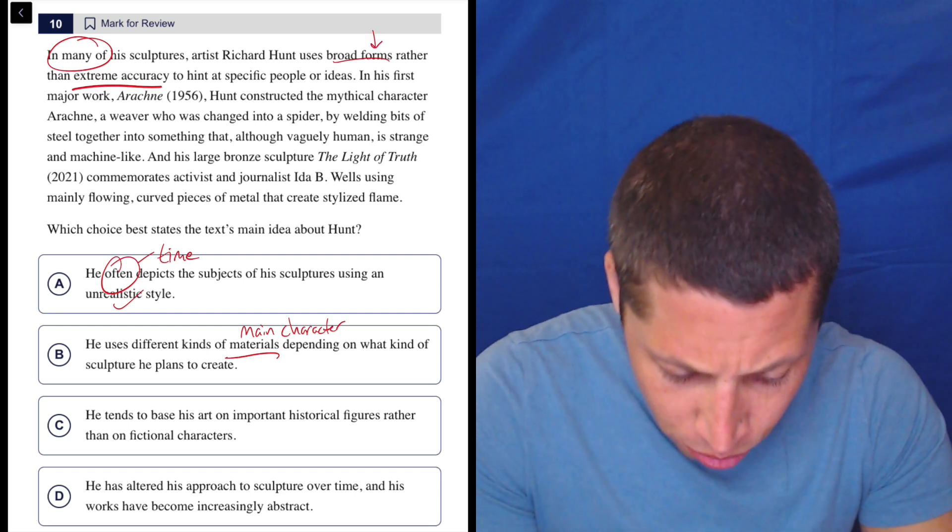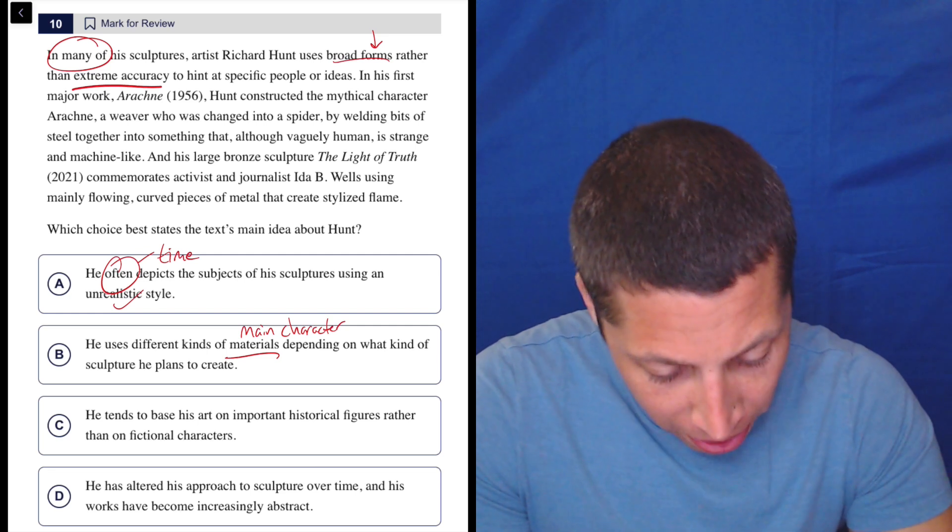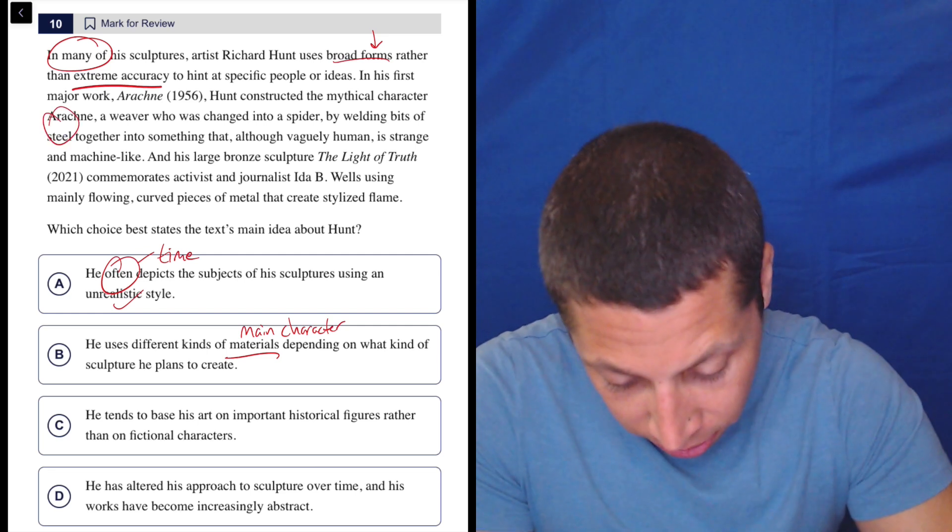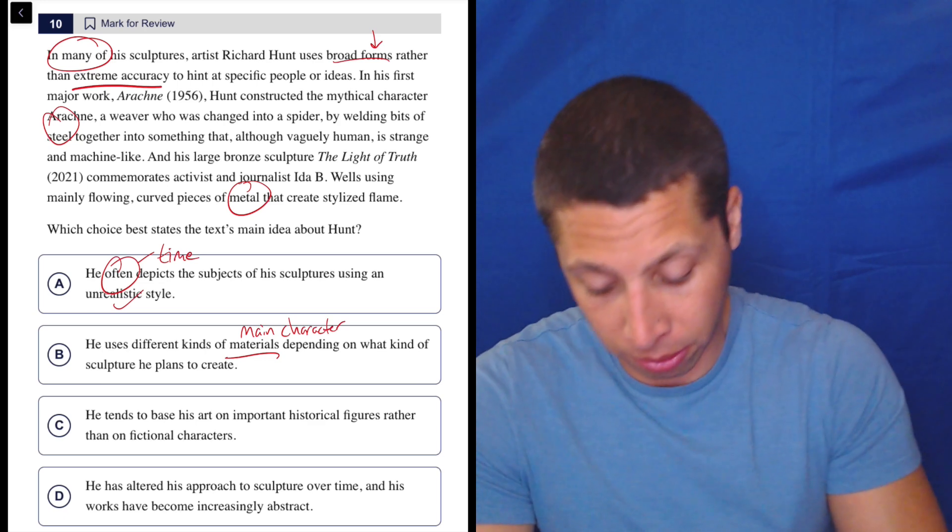It also doesn't really – yeah, I don't know. It says it's metal in both cases, right? This is steel, this is metal. So are these different materials? These seem like the same materials. So I don't know, this just seems wrong.